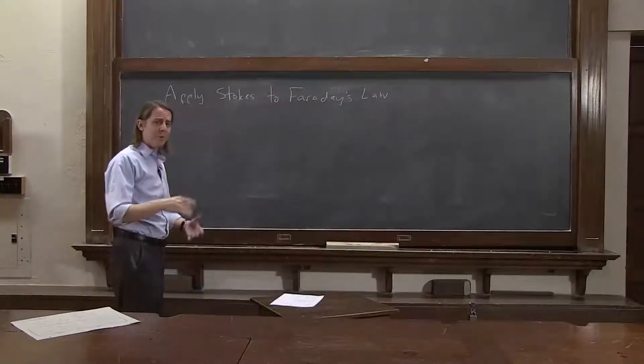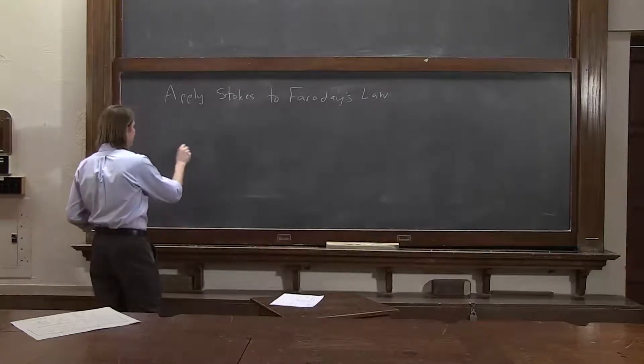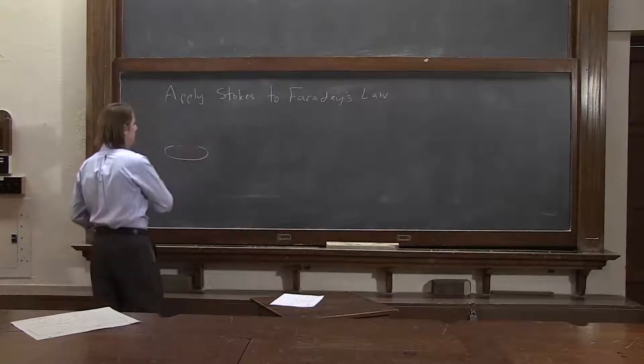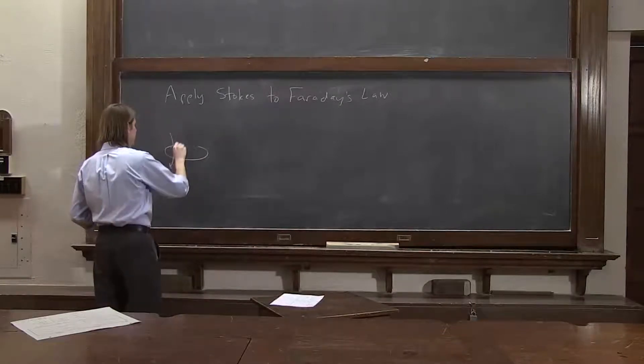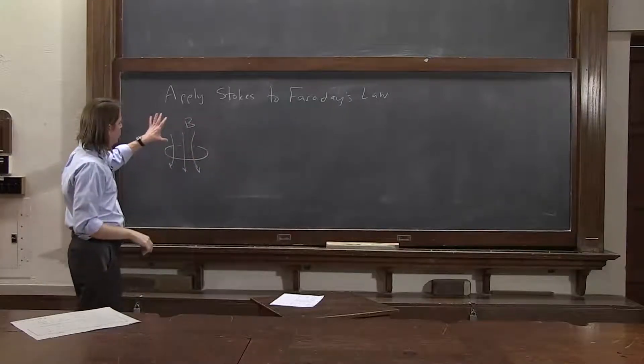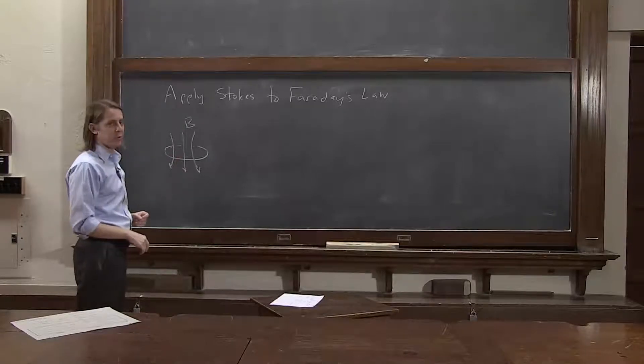And maybe you were even thinking about it when we talked about Stokes' theorem, that it does seem to be relevant. So in Faraday's law, we have a ring, say of wire, like that, and we have a B field going through the ring. And we decided it's when the B field changes, something changes in there, that we have an EMF going around.